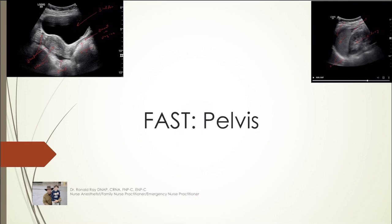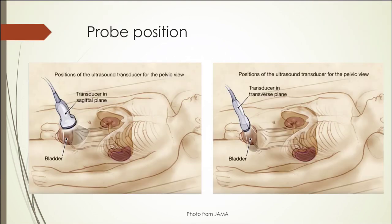You'll be looking at the suprapubic view. You'll be looking in two views, both transverse and in the sagittal plane. You want to get a good view and make sure you sweep your probe from side to side. On the transverse plane, you want the probe marker to be to the patient's right, and in the longitudinal plane, you want the probe marker to be superior.